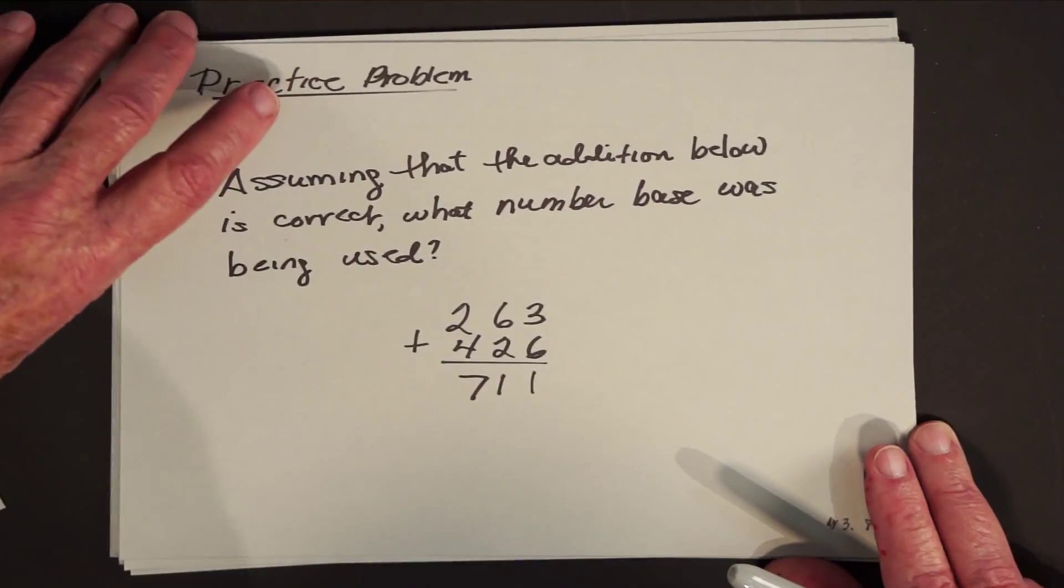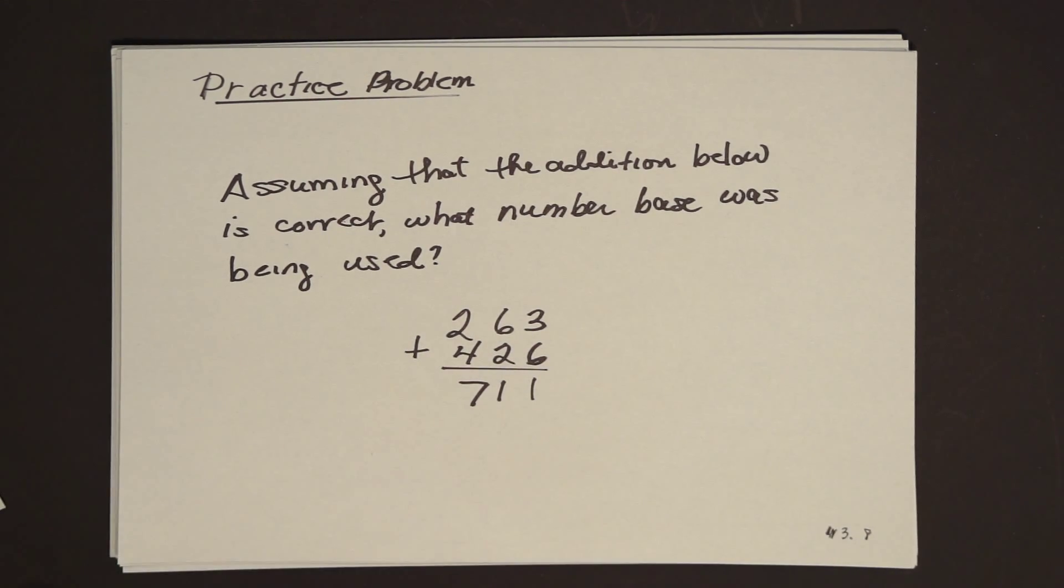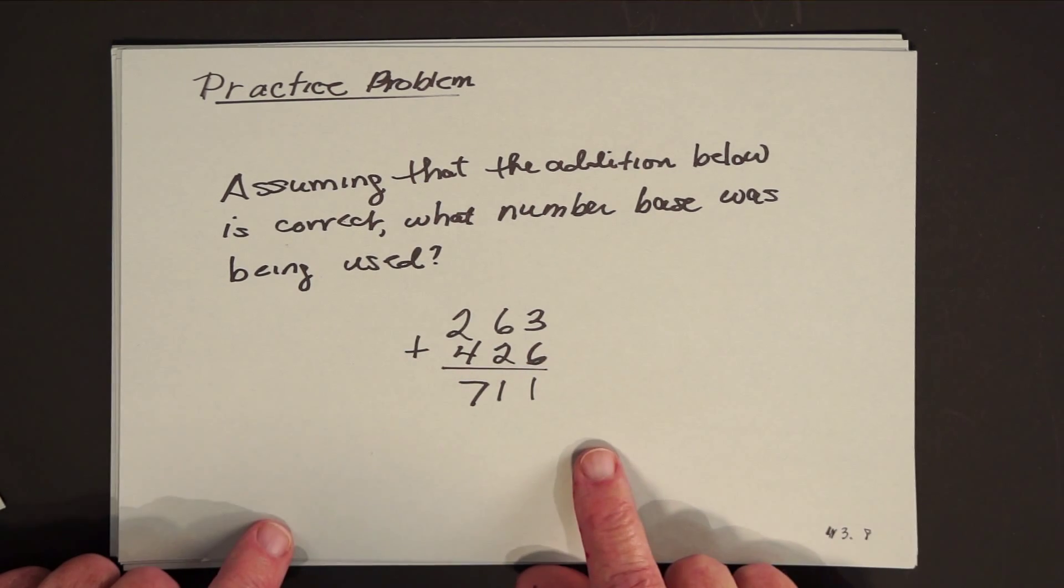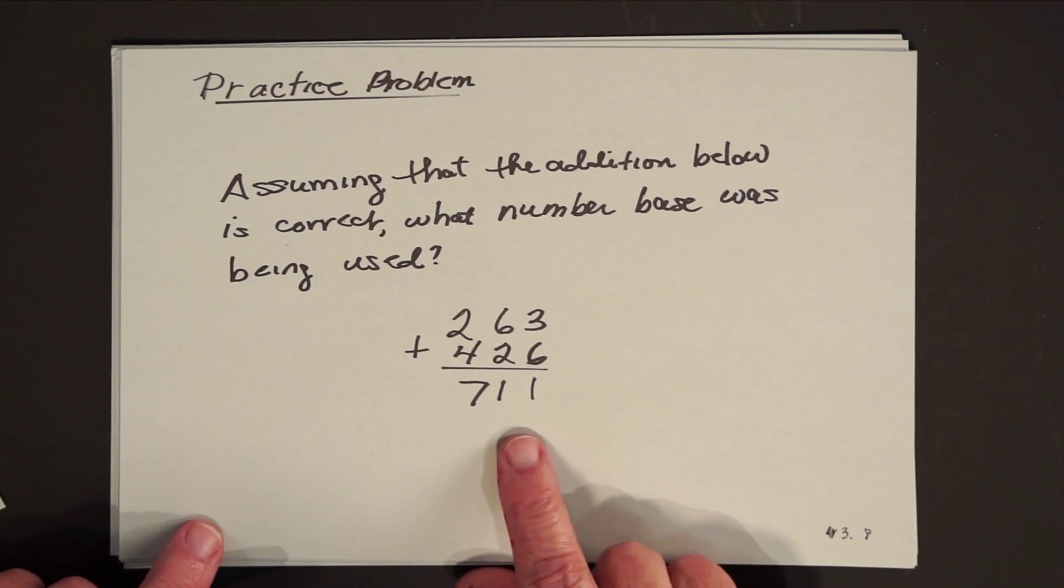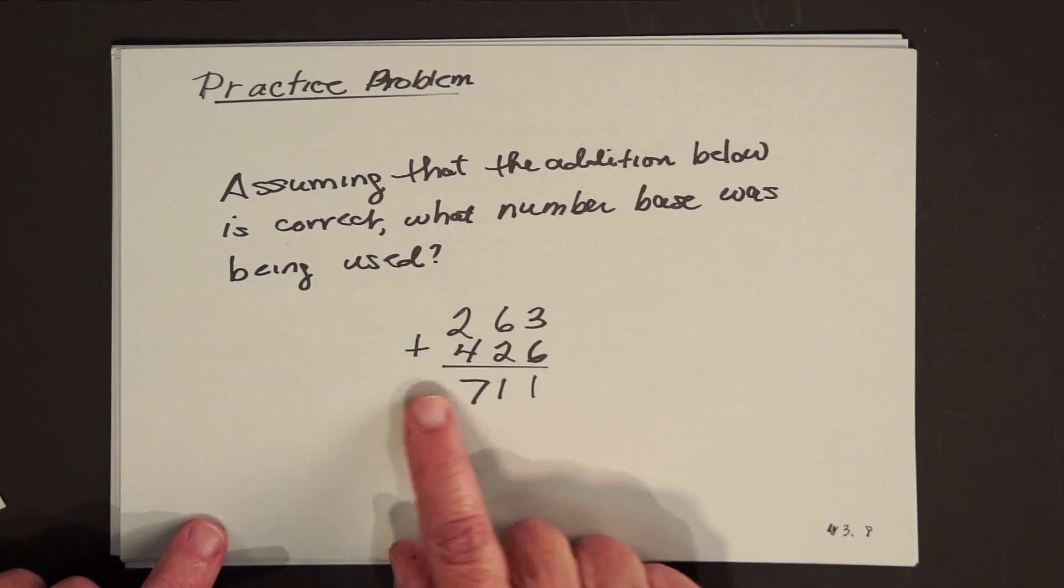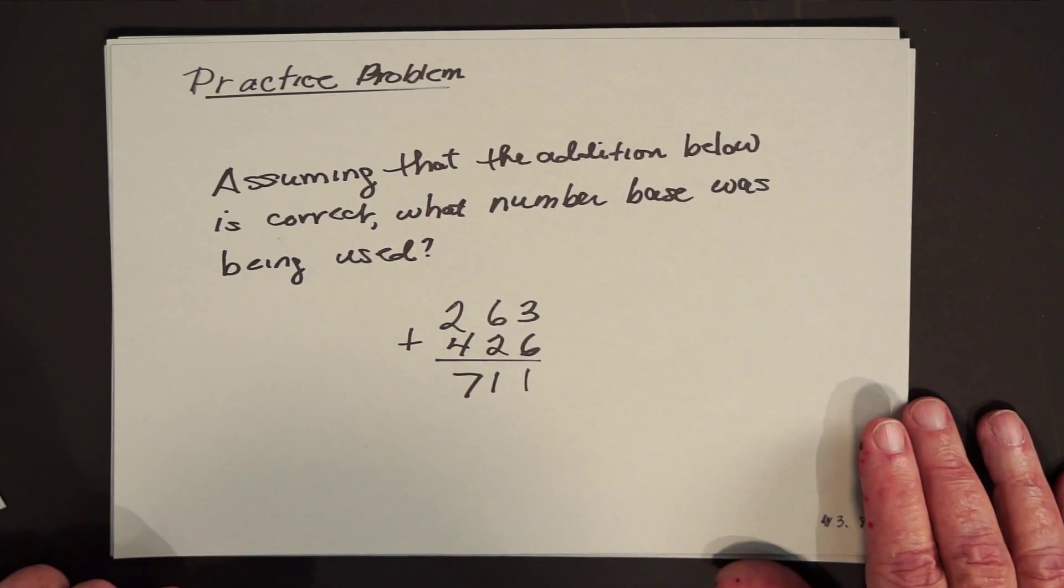But once again, this brings us to our favorite part of the course. Not because we like the problem, but because we know that once we come to this part, the lecture is almost over. And here's the practice problem for today. And remember that what you're supposed to do is pause the video, do the problem, and then come back and watch what our solution is. And here's the problem. Assuming that the addition below is correct, what number base was being used. You have 263 plus 426 equals 711. And the question is, what's the number base?